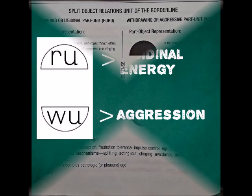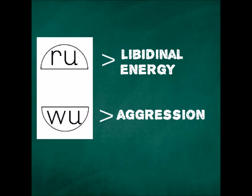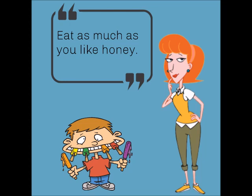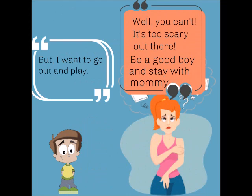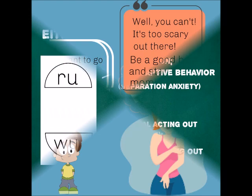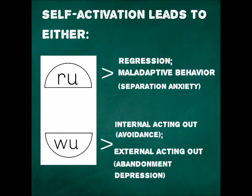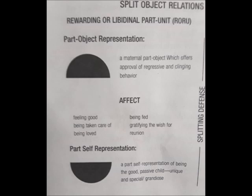Let's go back to the rewarding and withdrawing unit — what does this mean? The theory goes: as children, the borderline's maternal or primary object was either rewarding dysfunctional, maladaptive behavior while simultaneously withdrawing supplies for separation individuation. Obviously, this is the antithesis of good parenting, and why the borderline remains unintegrated and developmentally arrested. So you have the internalized mother as approving of regressive, clinging behavior, and the part-self-representation as being the good, passive child — unique, special, and grandiose. The affect reveals itself as feeling good, being fed, being taken care of, being loved, and so on.